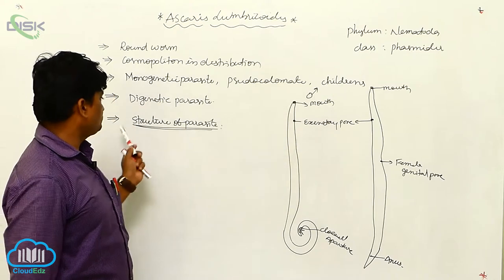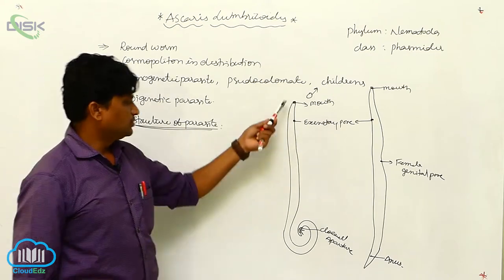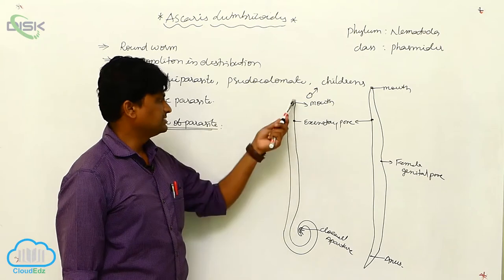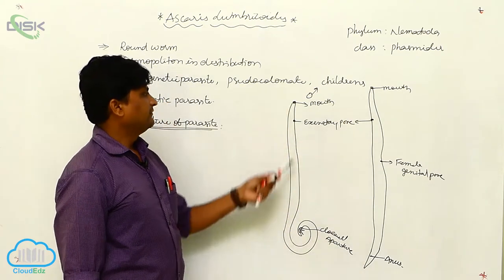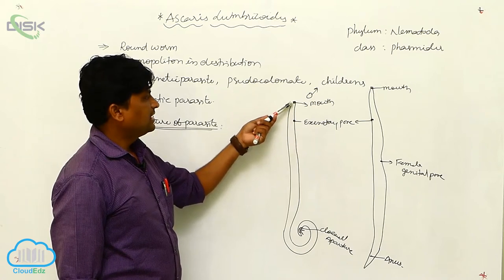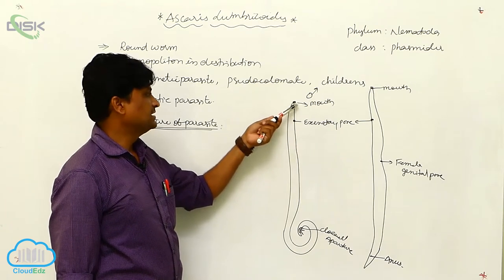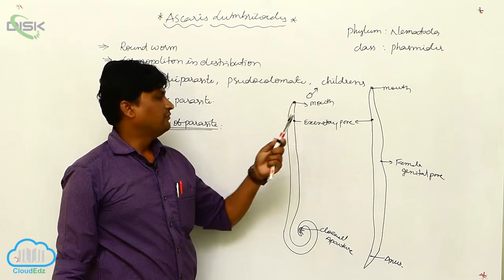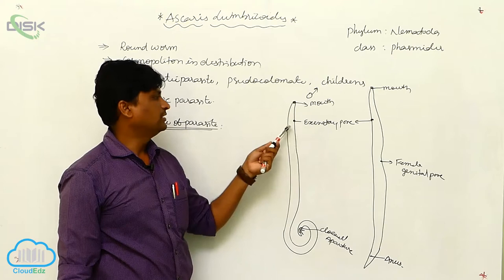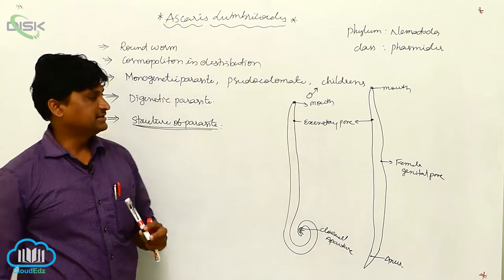The structure of the parasite is cylindrical. In the male, the anterior part has three fringe lips, cutaneous lips. There is a small pore consisting of the mouth, and just below the mouth is the excretory pore.